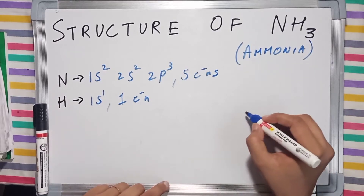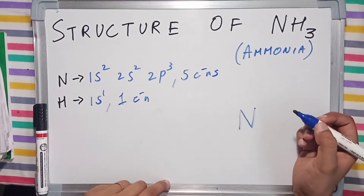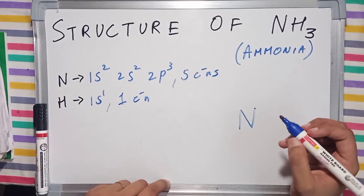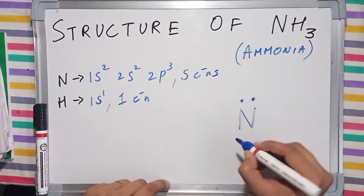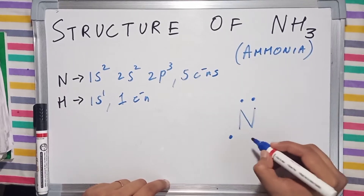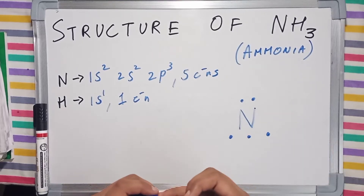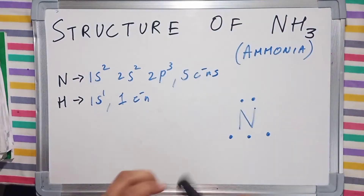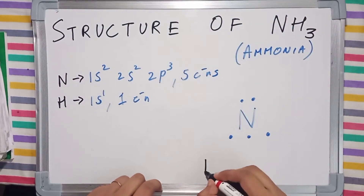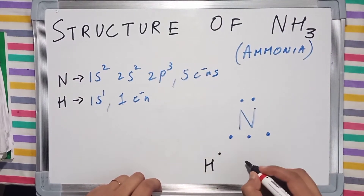Our central atom nitrogen has 5 valence electrons: 1, 2, 3, 4, 5. And now we are going to draw the 3 hydrogen atoms, each having a single valence electron.